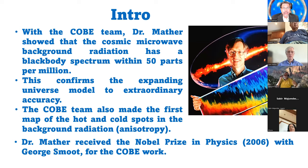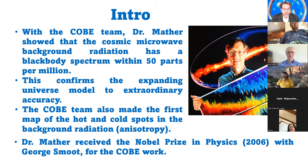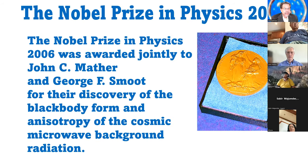With the COBE team, Dr. Mather showed that the Cosmic Microwave Background Radiation has a blackbody spectrum within 50 parts per million. This confirms the expanding universe model to an extraordinary accuracy. The COBE team also made the first map of the hot and cold spots in the background radiation, showing the anisotropy. For all of these works, Dr. Mather received the 2006 Physics Nobel Prize, along with George Smoot, primarily for their discovery of the blackbody form and anisotropy of the Cosmic Microwave Background Radiation.